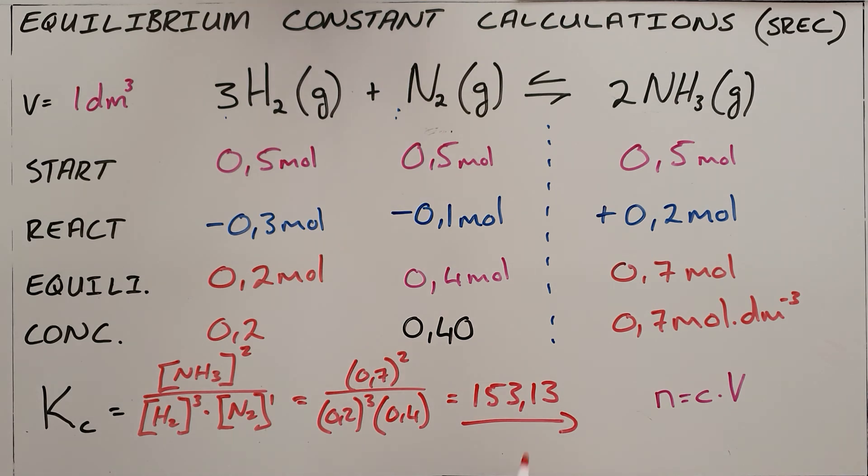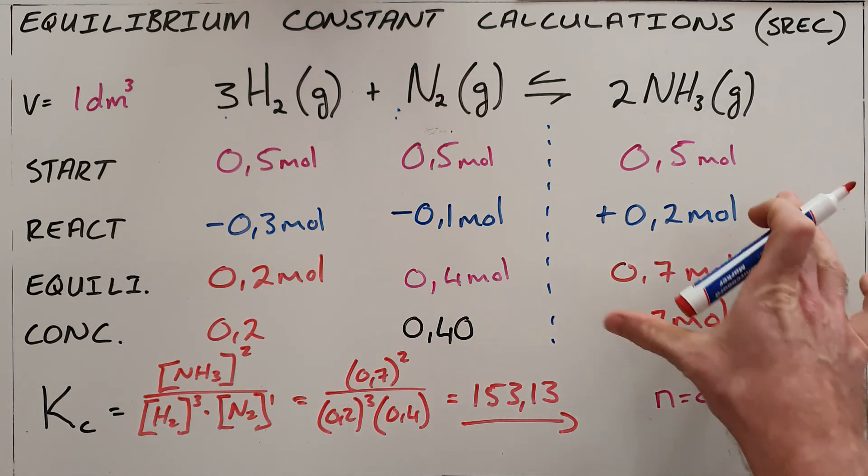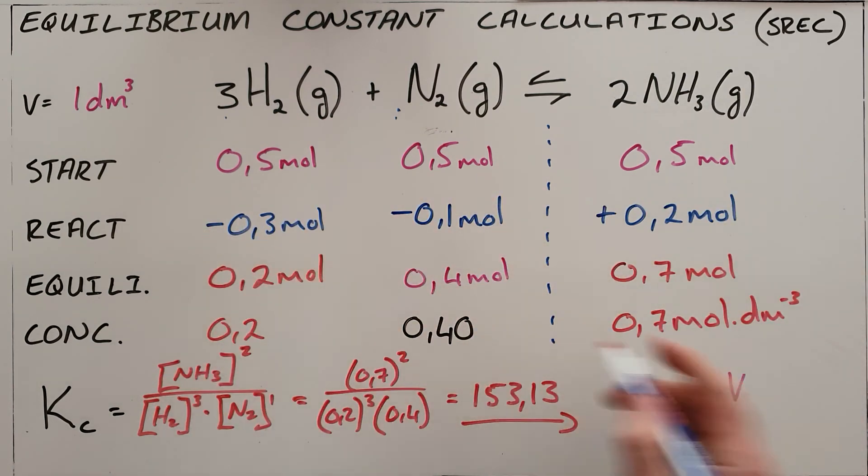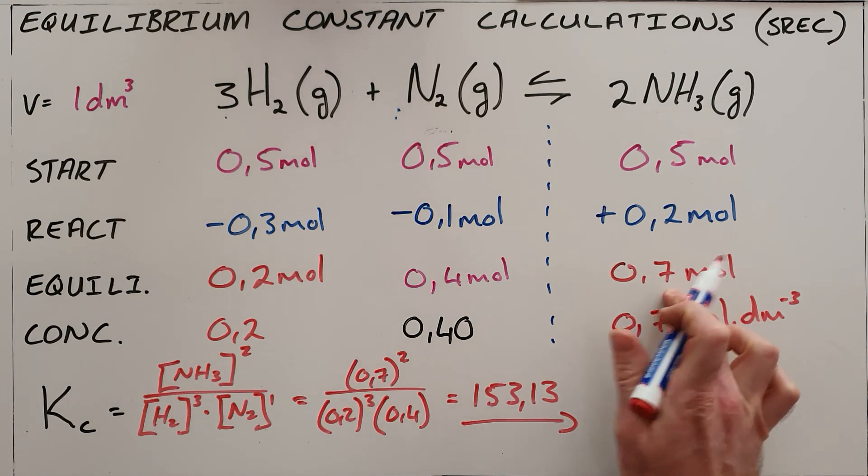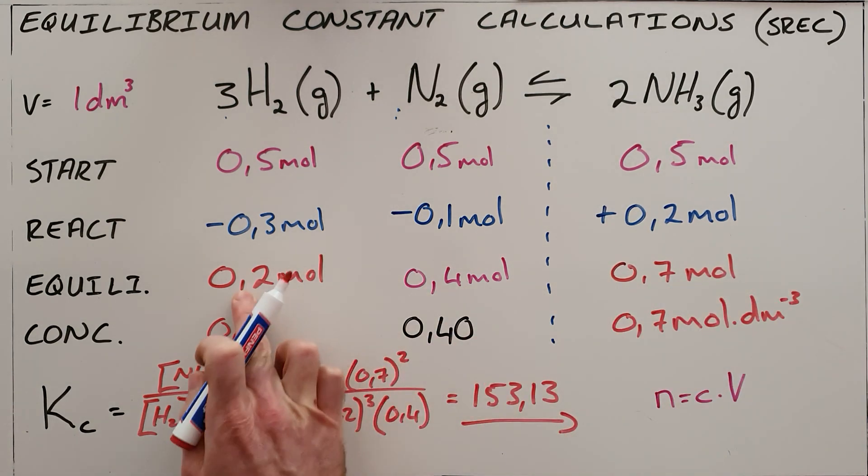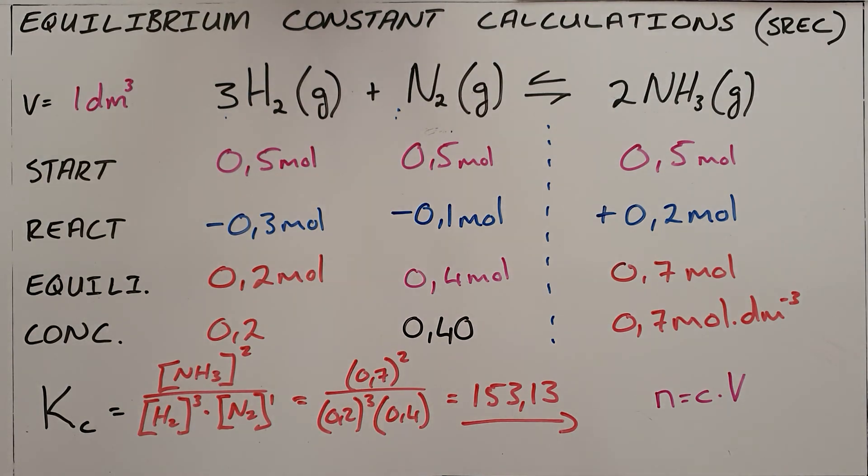And what this tells us, the fact that this equilibrium constant is so much bigger than one, is it tells us that equilibrium lies far to the right. We know that equilibrium lying to the right means that at equilibrium we will find more products than reactants, which makes sense here because we can clearly see I have 0.7 moles of products and only a combined 0.6 moles of reactants.